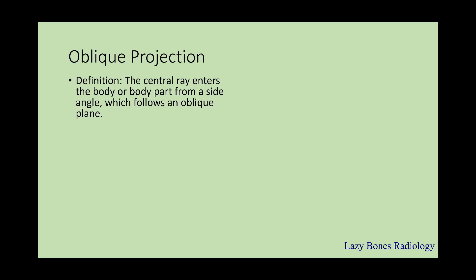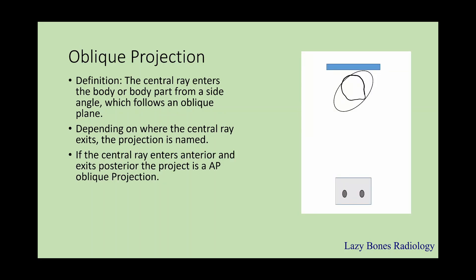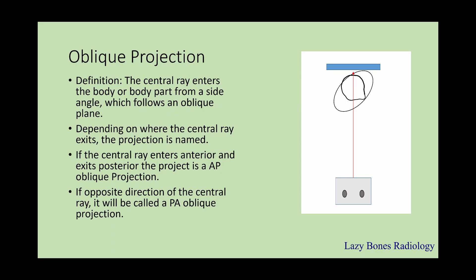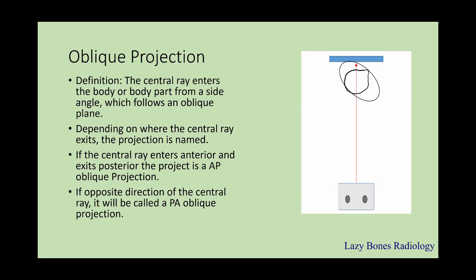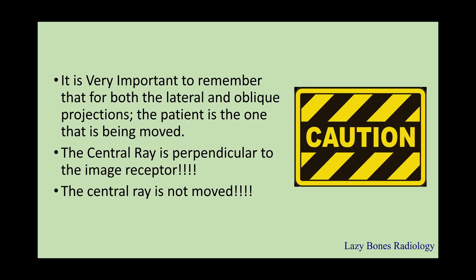Oblique projections. This is when the central ray enters the body or the body part from a side angle which follows the oblique plane. Depending on where the central ray exits, the projection is named. If the central ray enters anterior and exits posterior, this is known as an AP oblique projection. If the opposite direction, it will be called a PA oblique projection. It is very important to remember that in both lateral and oblique projections, the patient is the one that moves. The central ray is perpendicular to the image receptor and does not move.